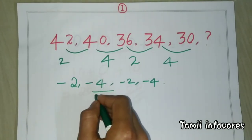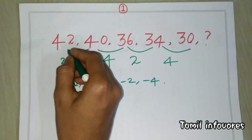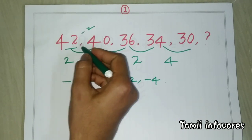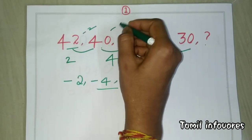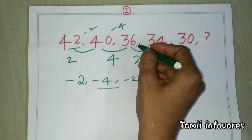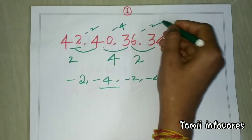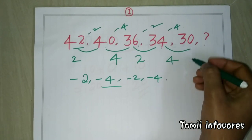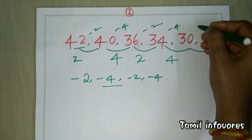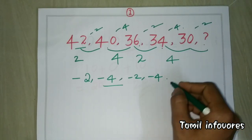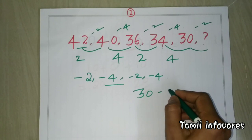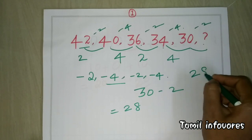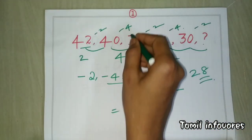The pattern for this puzzle is like minus two, minus four. In the first step we use minus 2: 42 minus 2 is 40. Next, we use minus 4: 40 minus 4 is 36. Then minus 2 gives 34, and minus 4 gives 30. Applying minus 2 next, the answer is 28.